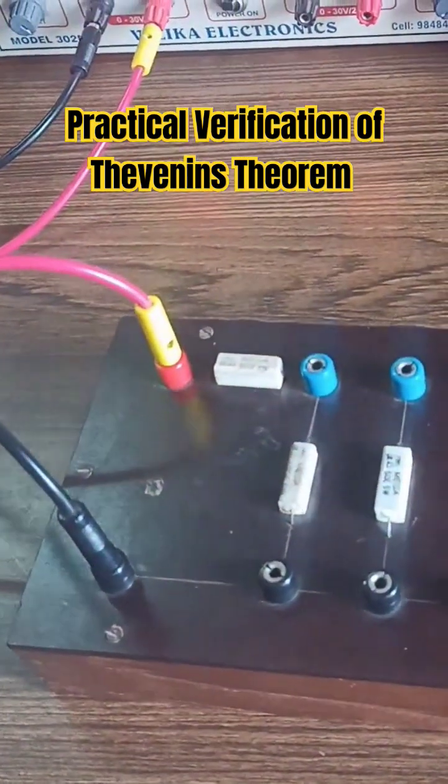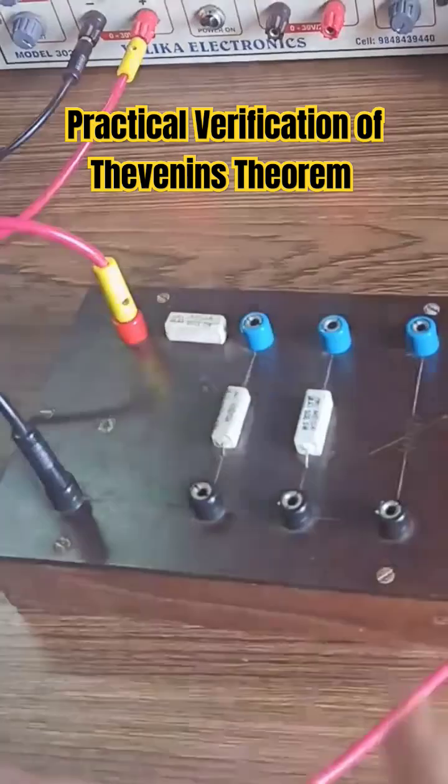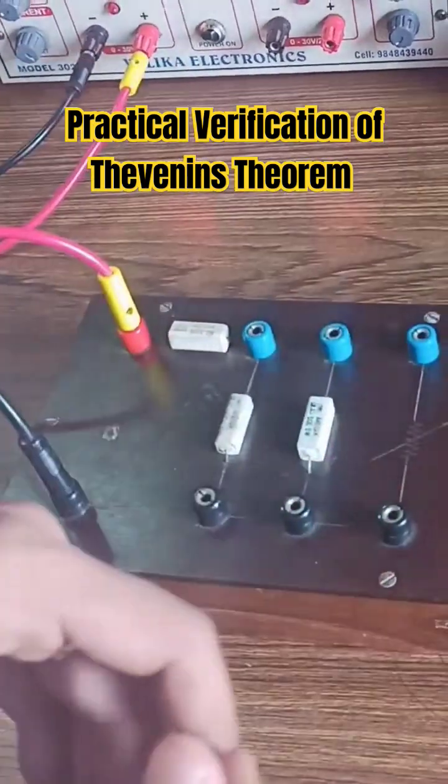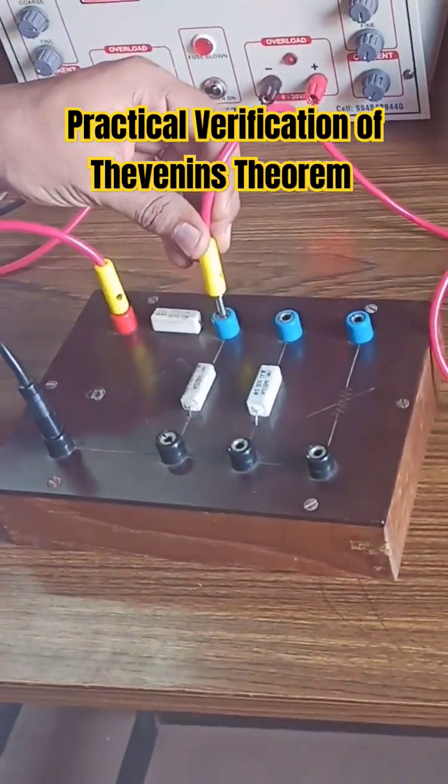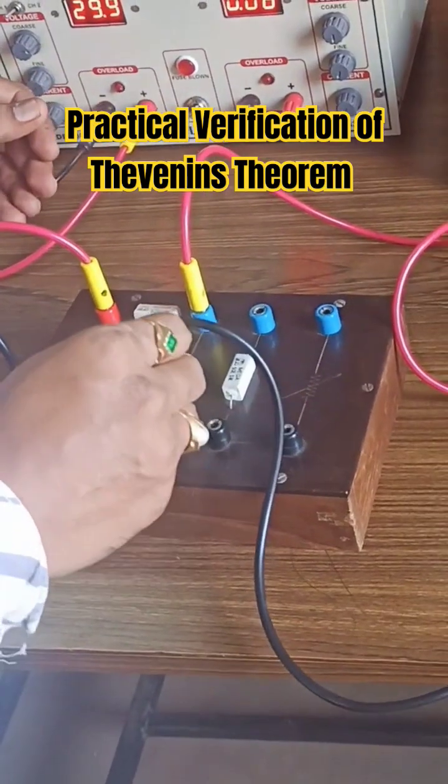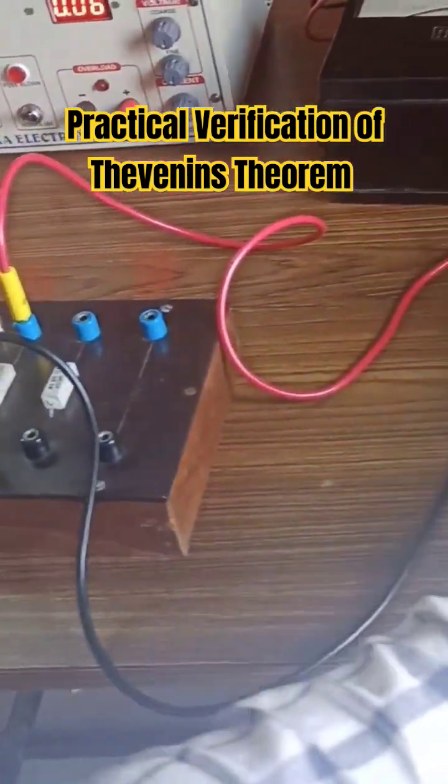This is nothing but 100 ohm resistor. Just connect, since it is open circuited, you will get only voltage. Connect to the positive terminal of the voltmeter and negative terminal of this terminal, it will directly show the voltage.